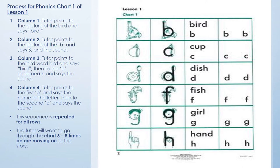You start in column one — there's a picture of a bird. You point to the picture and say 'bird,' using your finger the whole way. Moving to the second column, you point to the letter B with the bird underneath it to anchor that B with the picture, and say the sound 'buh.' In the third column, you point to the word 'bird' and say 'bird,' then to the B underneath and say 'B,' then the sound 'buh.'